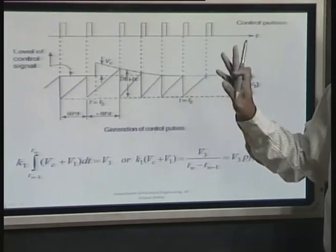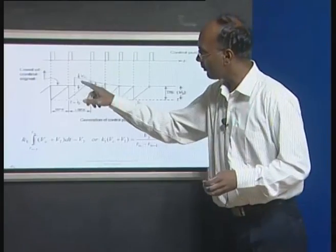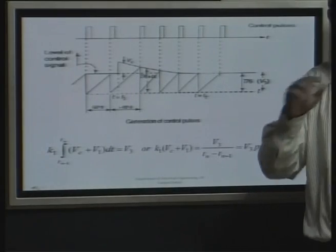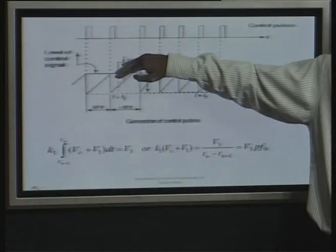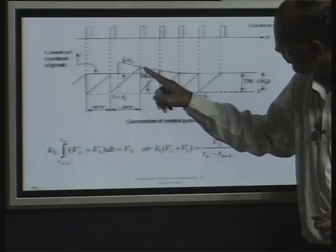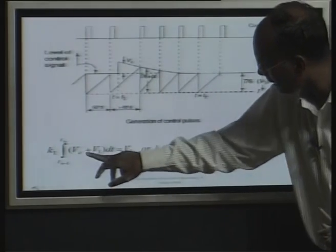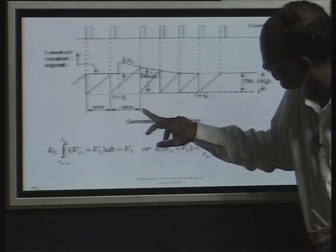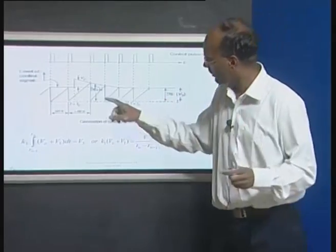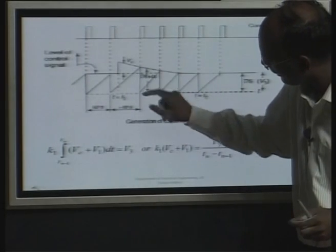Looking at the pulse generation: V₃ is compared with the ramp. When V_C is zero, the VCO generates a ramp circuit and when V₃ is reached, the pulse is generated normally at 60-degree intervals. If there is error and V_C has some positive value, the ramp increases faster (V₁ + V_C is added), so the ramp reaches V₃ sooner than 60 degrees — meaning this interval is extended beyond 60 degrees, delaying the firing pulse, which changes the alpha accordingly.